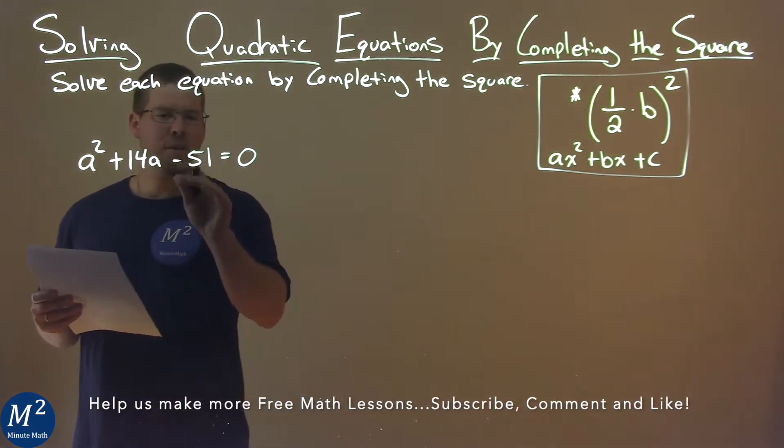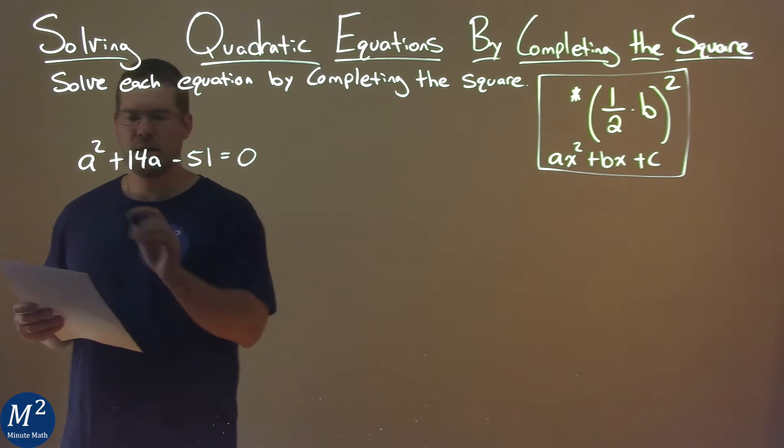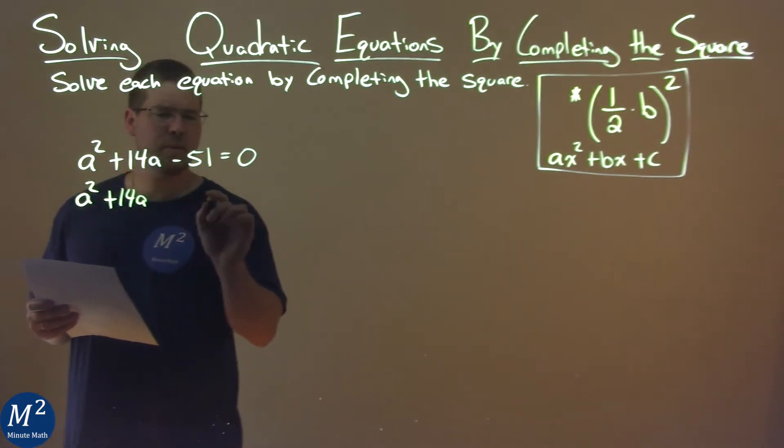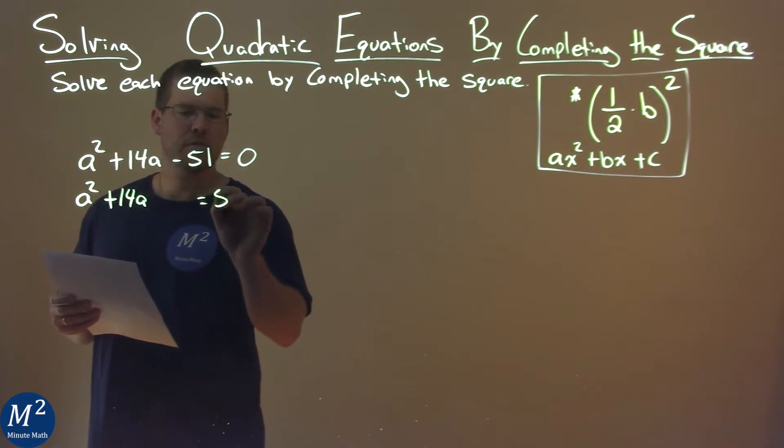First thing I want to do is I'm going to bring a 51 over to the right-hand side. So I have an a squared plus 14a, and I'm going to leave some space here, equals a positive 51.